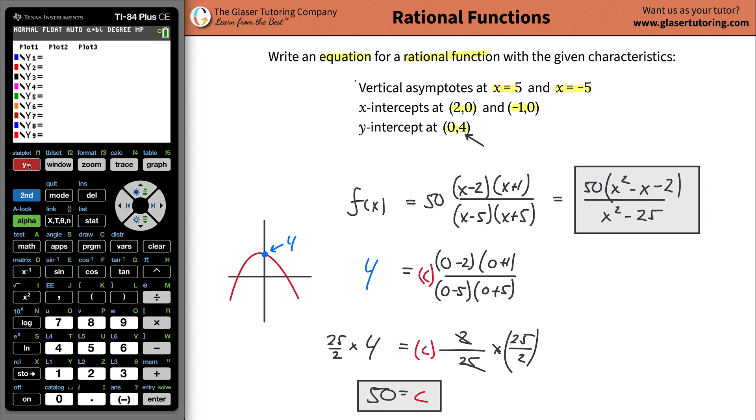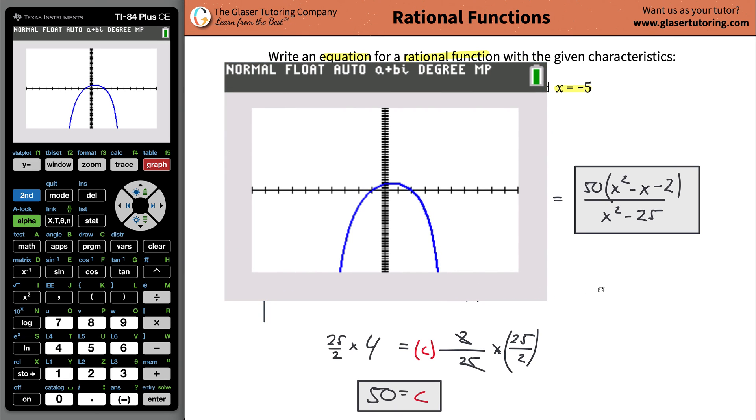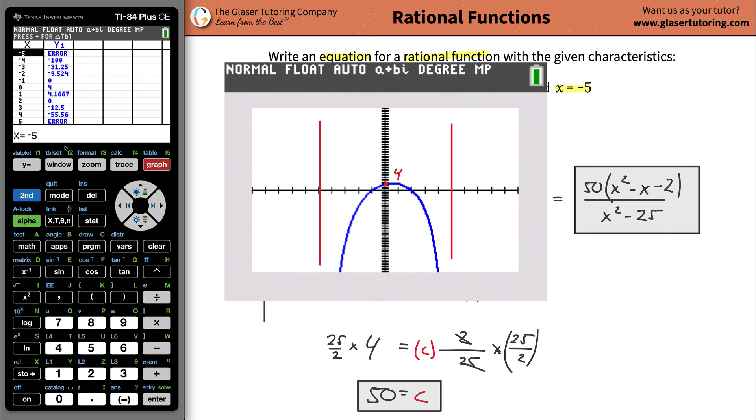And what you can always do to check yourself is go to your calculator and now plug in that function. So we've got 50 times X squared minus X minus 2, all being divided by, watch your parentheses, X squared minus 25, and let's hit graph. And here's the function. You can kind of see now that this function will never reach 5 or negative 5. Those are the vertical asymptotes that we found. We also found that the Y intercept here is going to be 4. Now it might be hard to see on the graph, so you can go to your table and look, when X is 0, Y is 4. And there it all is. And then the x-intercepts, you can see also that it was negative 1 there and a positive 2.